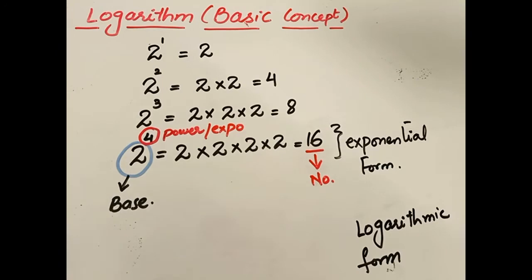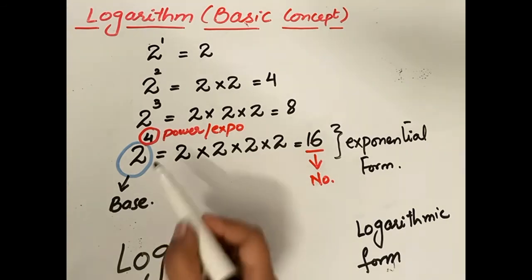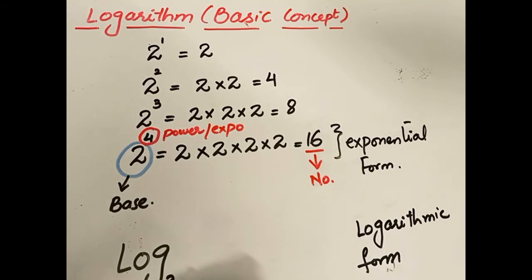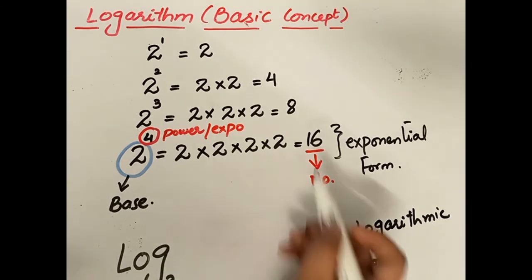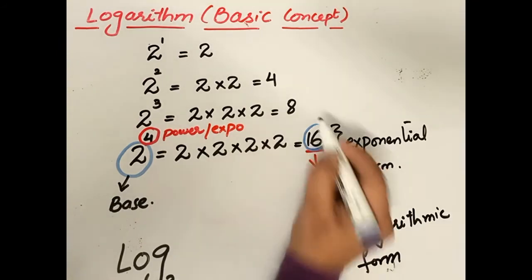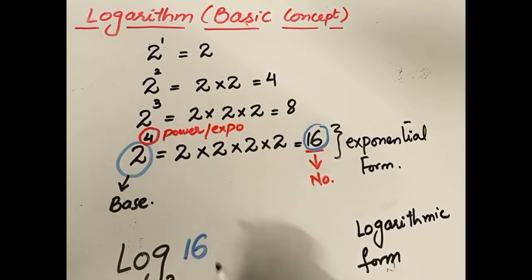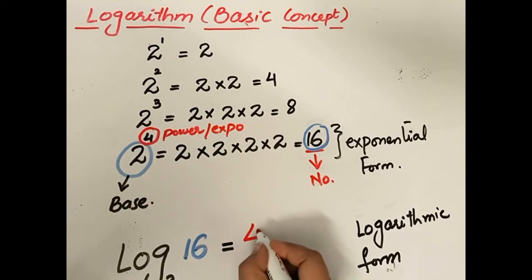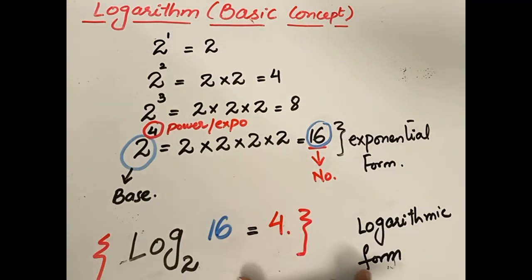This is called exponential form. If we are going to write this exponential form in logarithmic form, we write 'log', and whatever is the base of the exponential form is also written as the base of the logarithmic form. The number 16 comes after 'log base', and that equals the power, which is 4. So log base 2 of 16 = 4. This is the logarithmic form.